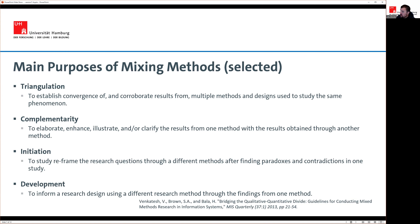The fourth purpose is development — you use one research method to help set up another. A classic example is a success factor study: you explore what factors lead to success in, say, digital transformation of a firm. You study this qualitatively and generate a list of, say, 20 success factors, then measure them quantitatively through a survey to determine which are most or least important. That would be a development purpose. So triangulation, complementarity, initiation, and development are the four main purposes of mixing methods.